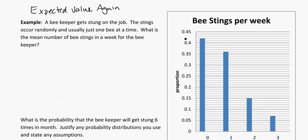Alright, so we're looking at some more expected value problems here and just alternate ways that you can see them sometimes asked of you in the test. Let's take a look at this question. A beekeeper gets stung on the job. The stings occur randomly and usually just one bee at a time.